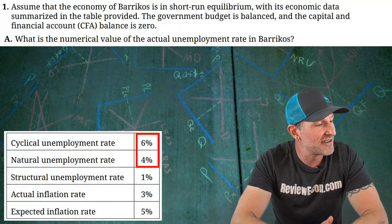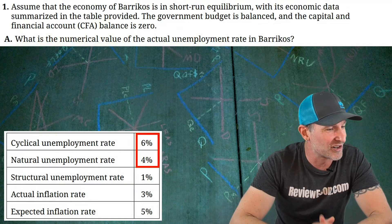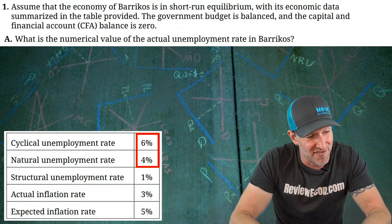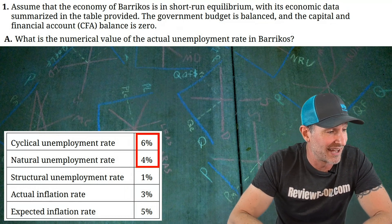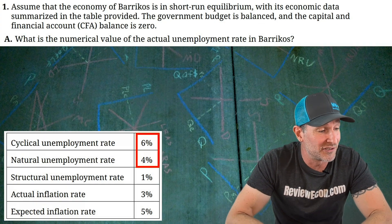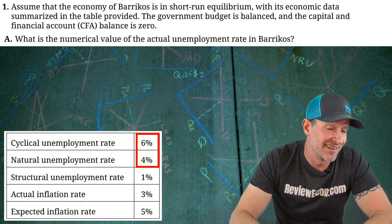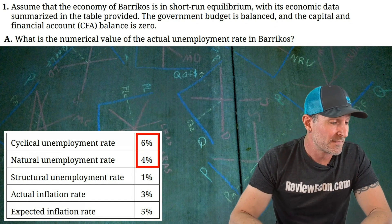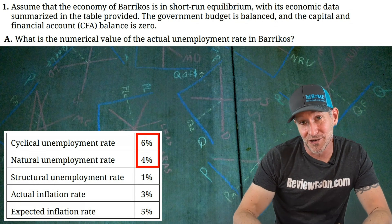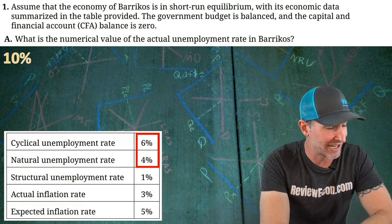Moving on to the first question — we have Barricos, which is in short-run equilibrium with its economic data in the table below. They currently have a balanced government budget and the capital and financial account balance is zero, which means their current account balance is zero also. Part A asks for the numerical value of the actual unemployment rate in Barricos. We see the cyclical unemployment rate and the natural unemployment rate in the table. The natural rate is the unemployment rate when cyclical unemployment is zero, so adding the cyclical rate to the natural rate gives us the current unemployment rate of 10%.